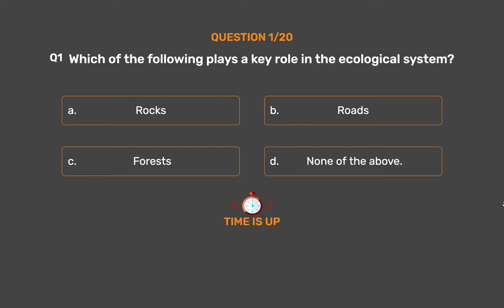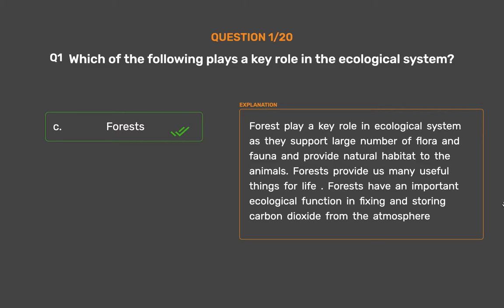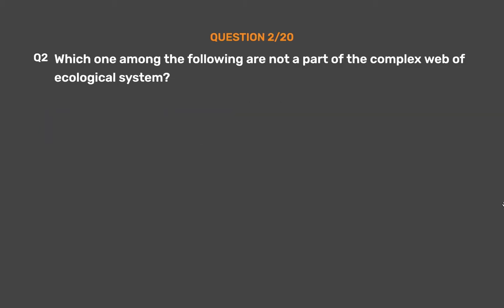The correct answer is Option C: Forests. Forests play a key role in the ecological system as they support a large number of flora and fauna and provide natural habitat to animals. Forests provide us many useful things for life and have an important ecological function in fixing and storing carbon dioxide from the atmosphere.